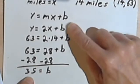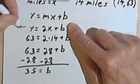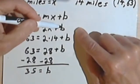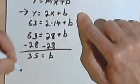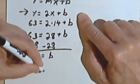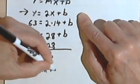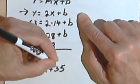So now we can take this equation here and instead of the B, we'll put in 35. Y equals 2x plus 35.